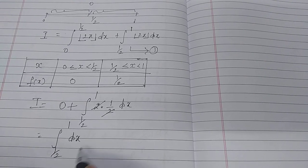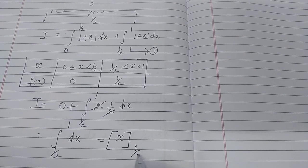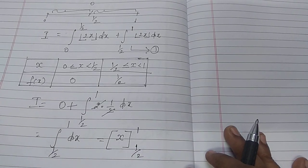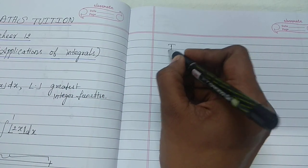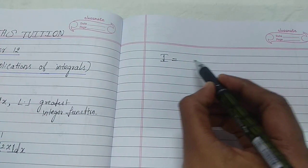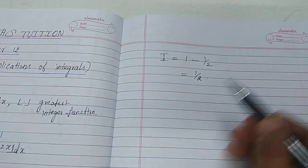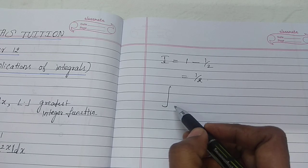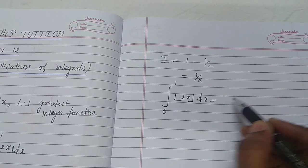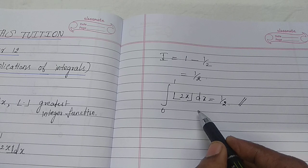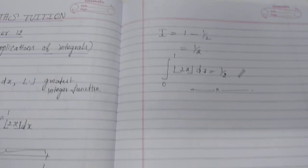Now integrate: this equals x evaluated from 1/2 to 1. Substituting the upper limit first and then subtracting the lower limit, I equals 1 minus 1/2, which gives 1/2. Therefore the integral from 0 to 1 of [2x] dx equals 1/2. This is the answer. Example 9.7 is complete. We now move to Example 9.8.